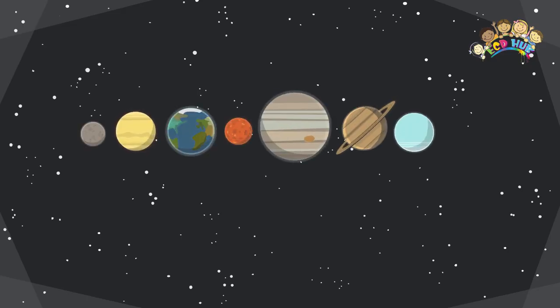Cool planet spinning fact: all the planets have different day lengths. These different day lengths are because of how the planets were formed and what knocked into them when they were very young.